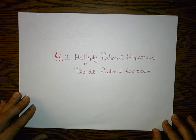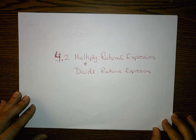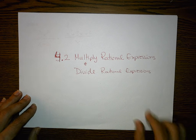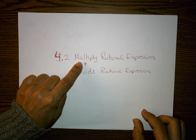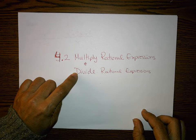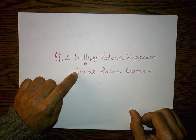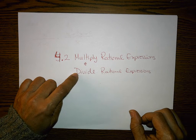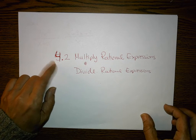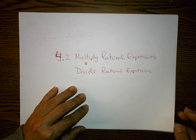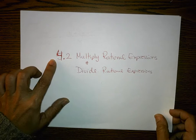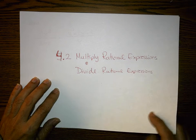Here's the video for 4.2 — multiply rational expressions and divide rational expressions. If you learn how to multiply rational expressions, divide should be easy because there's that rule that says we can just multiply by the reciprocal to get rid of the division. I wrote 5.2 on the worksheet, but it's unit 4, section 2.